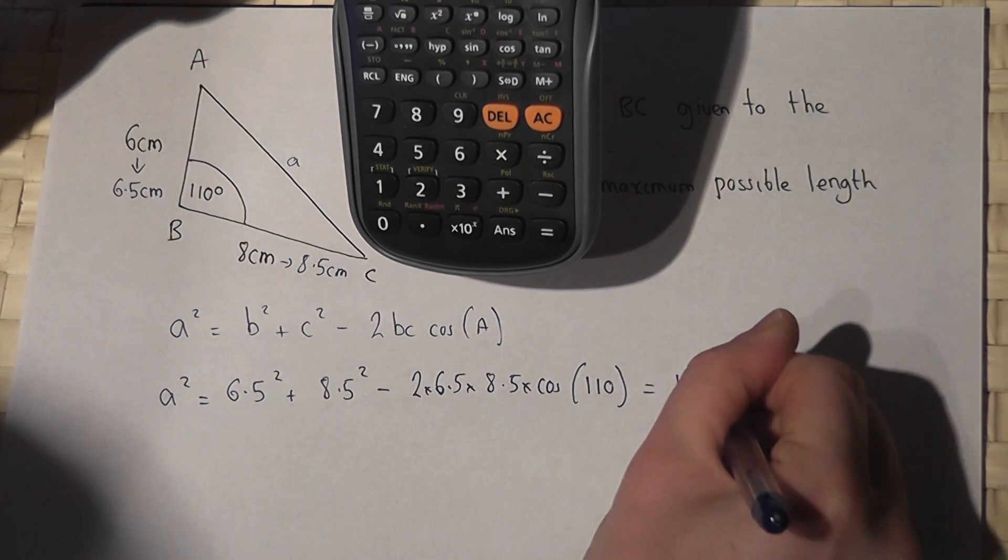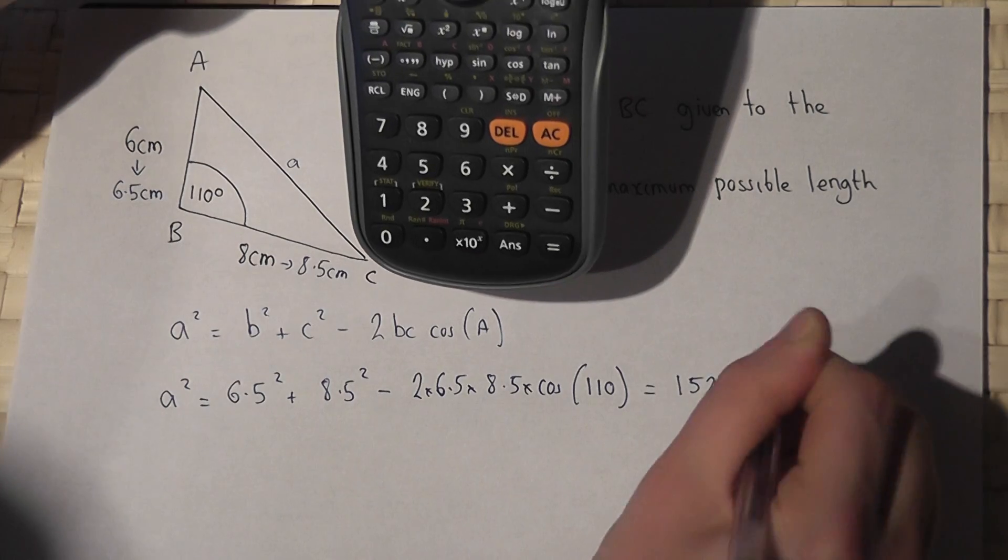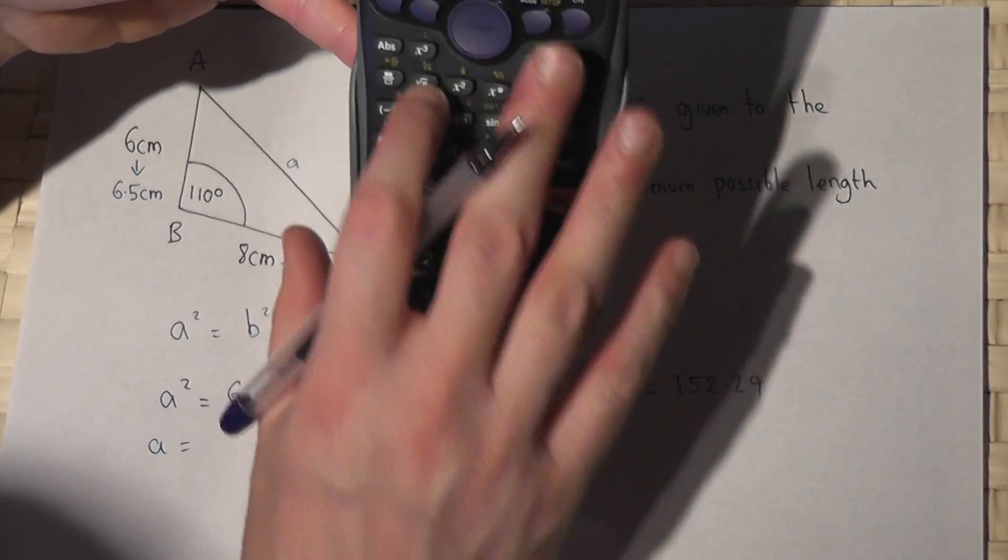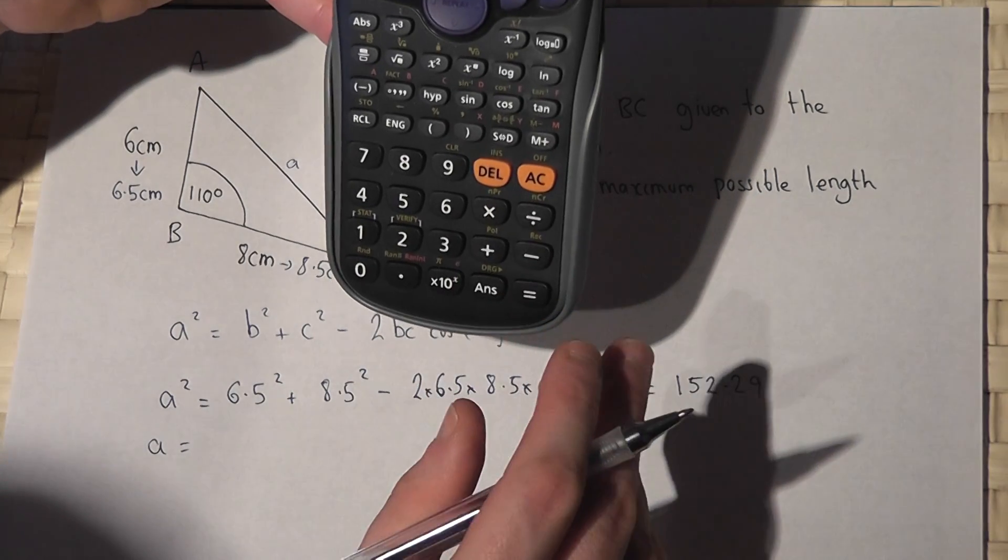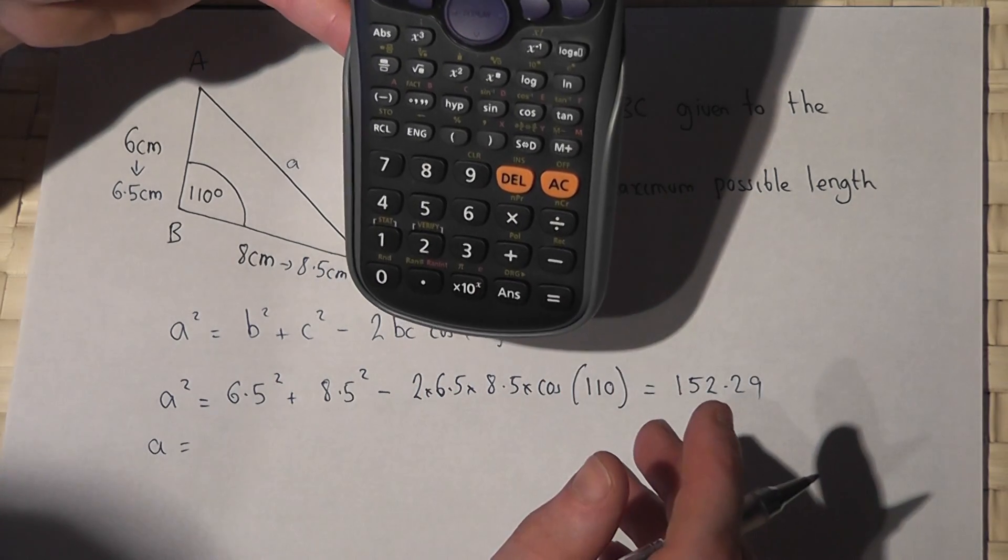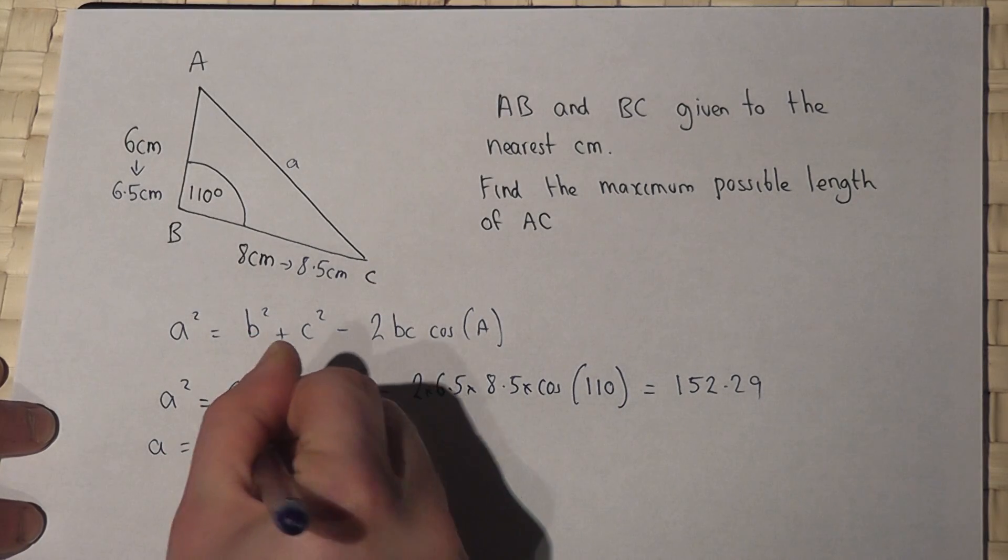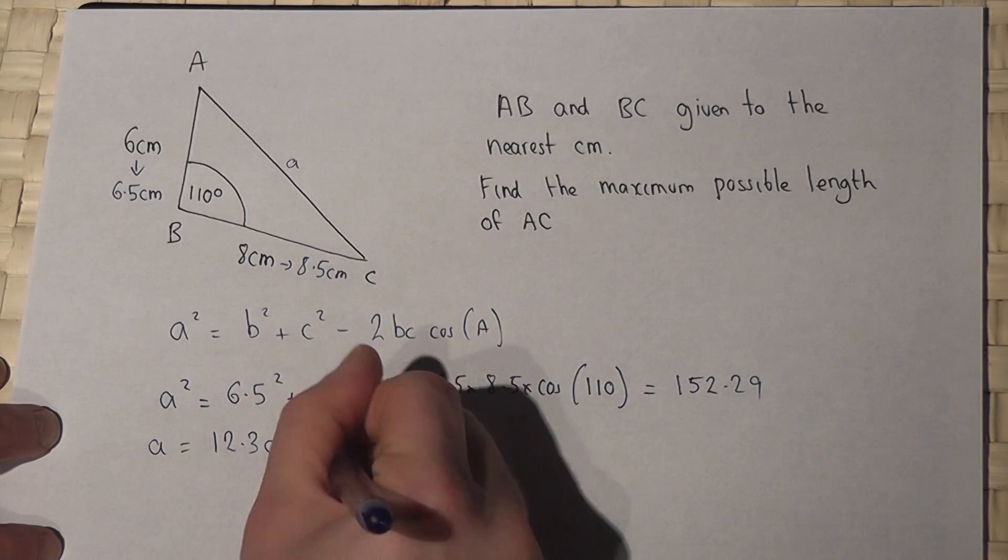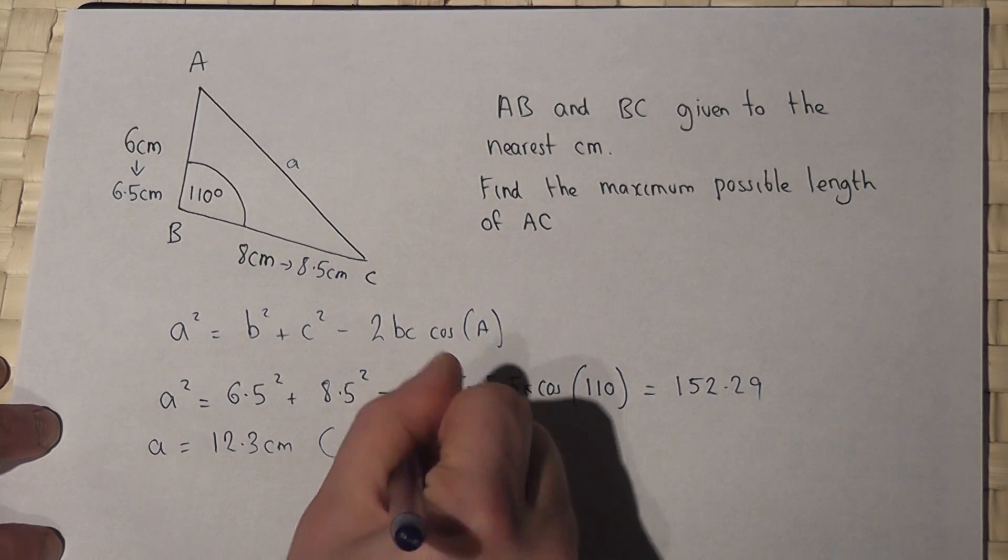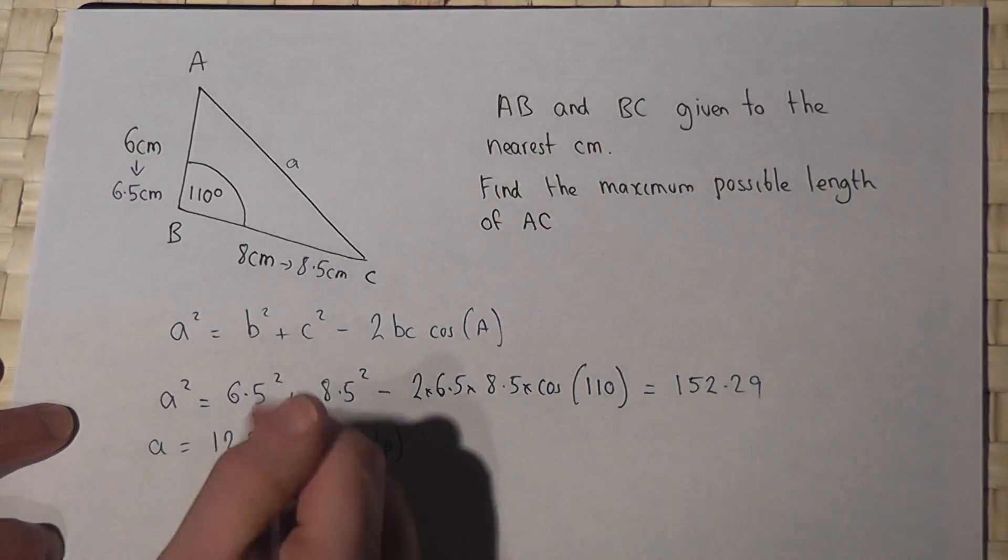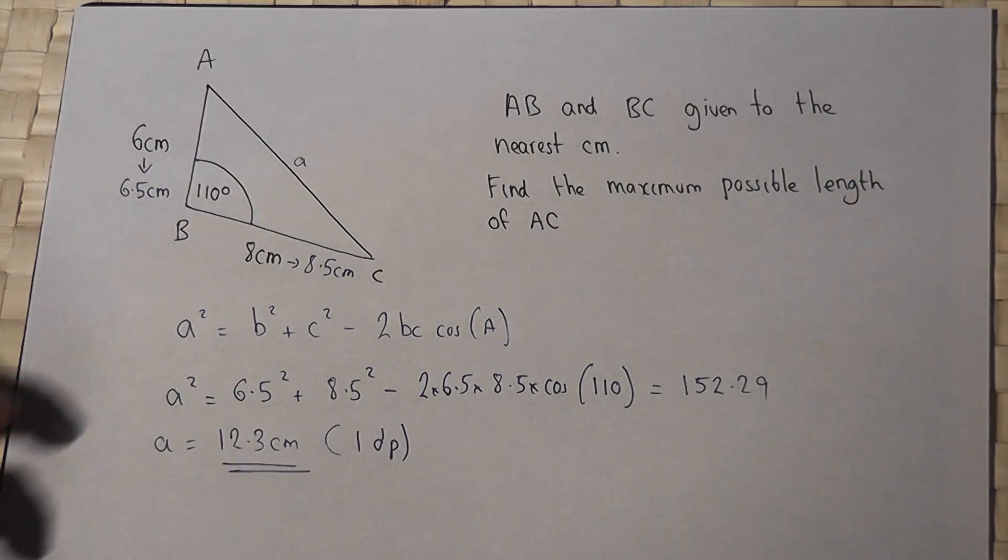So to find out what a is we square root the answer, so square root answer, and we work it out to be 12.3 to one decimal place. a is 12.3 centimeters to one decimal place, so the maximum possible length that this side could be is 12.3 centimeters.